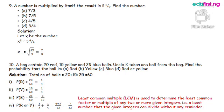Question 9: A number is multiplied by itself. The result is 5 and 4 over 9. Find the number. Let x be the number. We have x raised to power 2 equals 5 and 4 over 9. Converting the mixed fraction into improper fraction, we multiply the whole number with the denominator and add the numerator to it.